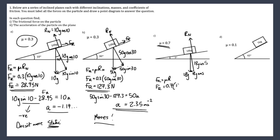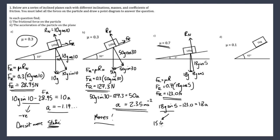The frictional force is 0.7 × 18g cos5 = 123 newtons. We then do 18g sin5 − 123 = 18a. Now 18g sin5 comes out to about 15.4 newtons, so straight away we can see it's not going to move — there's too much frictional force to overcome. We'd have to increase the inclination of the plane to achieve movement.